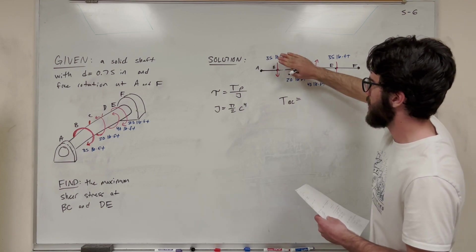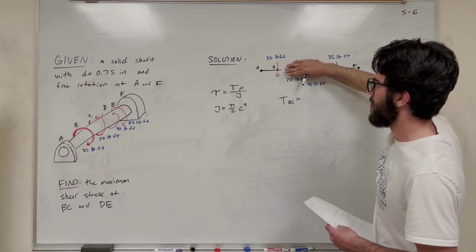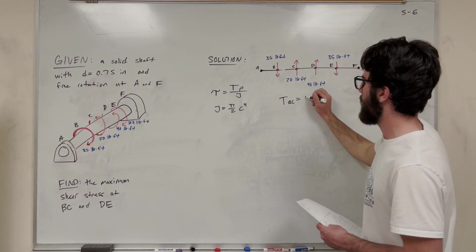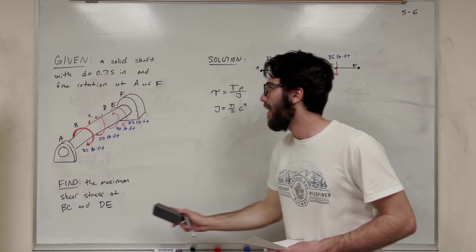But then when we go to BC, we have this one force acting here. We're basically taking a cut. So we're taking a cut here and we see that's 35 pounds foot pushing this way. So our torque in there has to be 35 pound-feet.